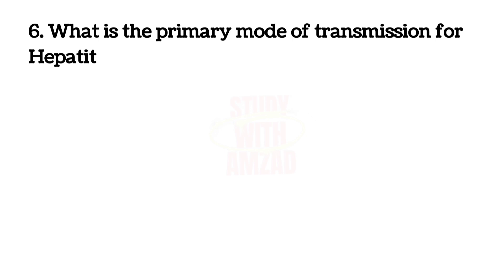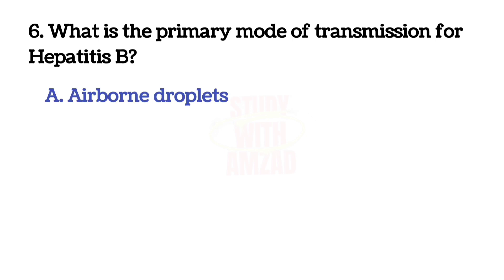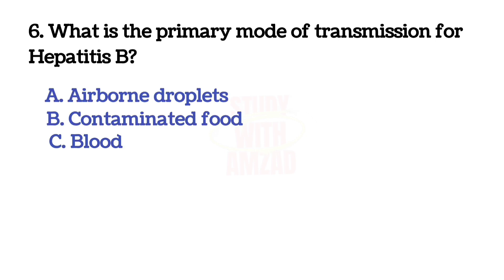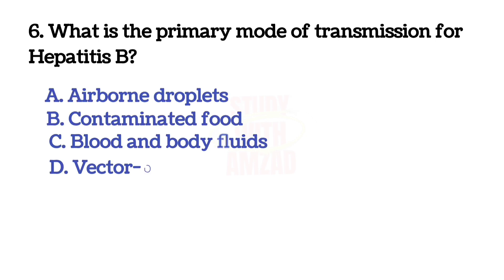Next question: what is the primary mode of transmission for hepatitis B? The correct answer is C, blood and body fluids.